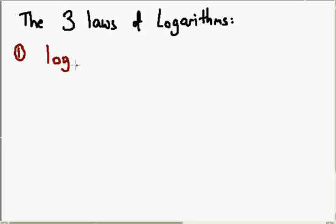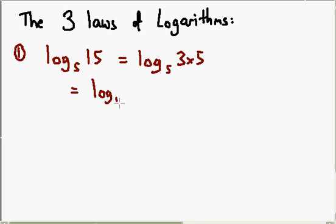So I'm going to look at log base 5 of 15. Now what we can do is we can say, well 15 is actually 3 times 5. So then this first law allows us to write it as log base 5 of 3 plus log base 5 of 5. Because there is a times here, we are allowed to split them and the two logs get added together. So one thing to notice from this is that log 5 of 5 is just 1. So that's log base 5 of 3 plus 1.